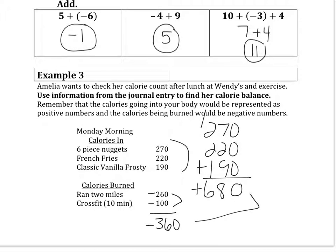So when I put the two of these together, 680, basically adding the negatives so I can subtract and keep the sign of the larger. And I have more calories coming in, so it's still going to be a positive. And I'm going to have an overall balance of 320 calories left.